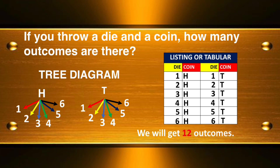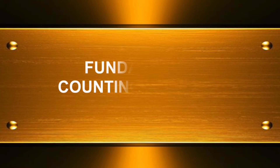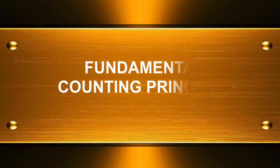Now, how do we count without counting manually? We can use the Fundamental Counting Principle — the easiest way to get the possible outcomes by multiplying the number of choices in each event.